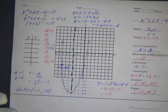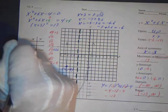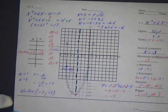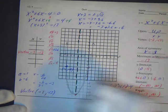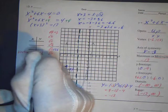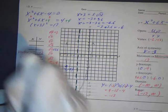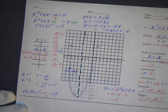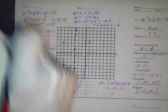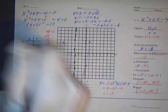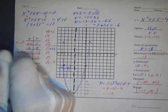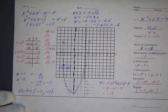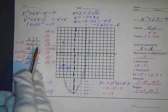To summarize our five key points: the vertex is (negative 3, negative 13); the y-intercept is (0, negative 4); the symmetrical point across the axis is (negative 6, negative 4); the left x-intercept is (negative 6.6, 0); and the right x-intercept is (0.6, 0). Notice the symmetry around the vertex and axis of symmetry at x equals negative 3.